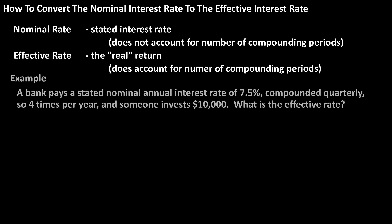As an example, if a bank pays a stated nominal annual interest rate of 7.5% that compounds quarterly — so four times per year — and someone invests $10,000 into this account, what is the effective annual interest rate?